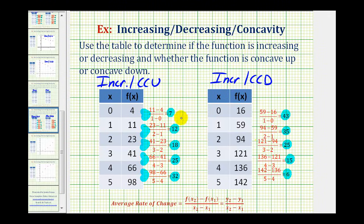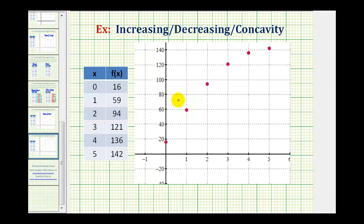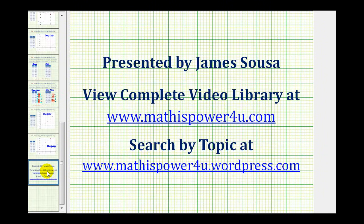Again, let's go ahead and verify this graphically. Here's the first increasing function — notice how the points are going uphill, and it also forms an upward facing cup, therefore it's increasing and concave up. And for the last table, again it's going uphill so it's increasing, but it forms a downward facing cup, therefore it's concave down. I hope you found these examples helpful.